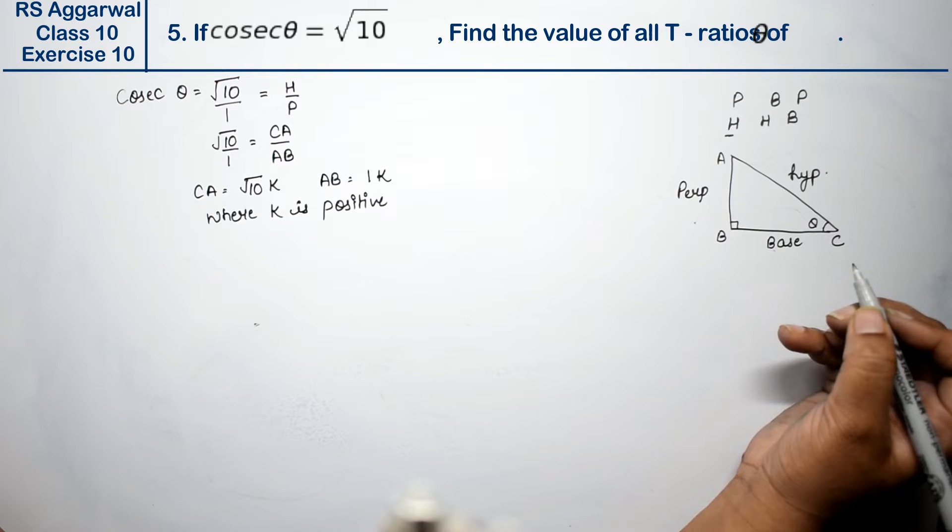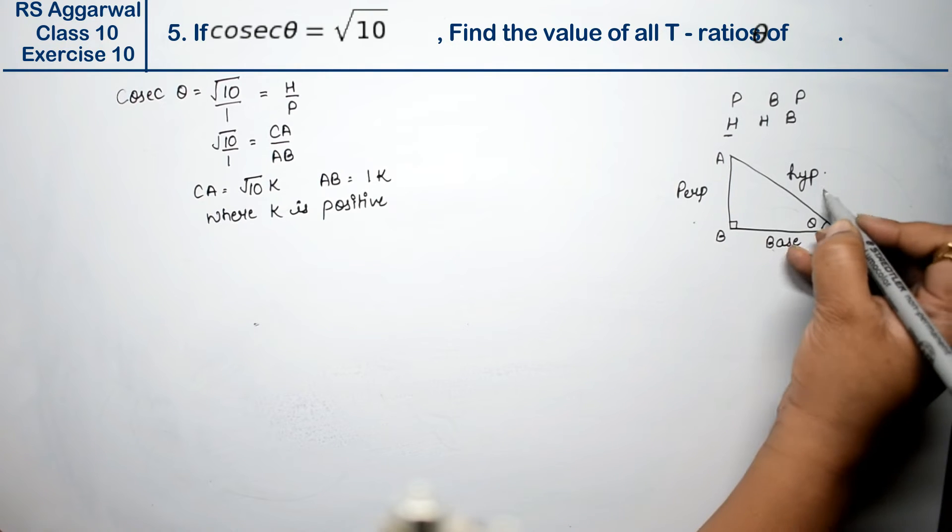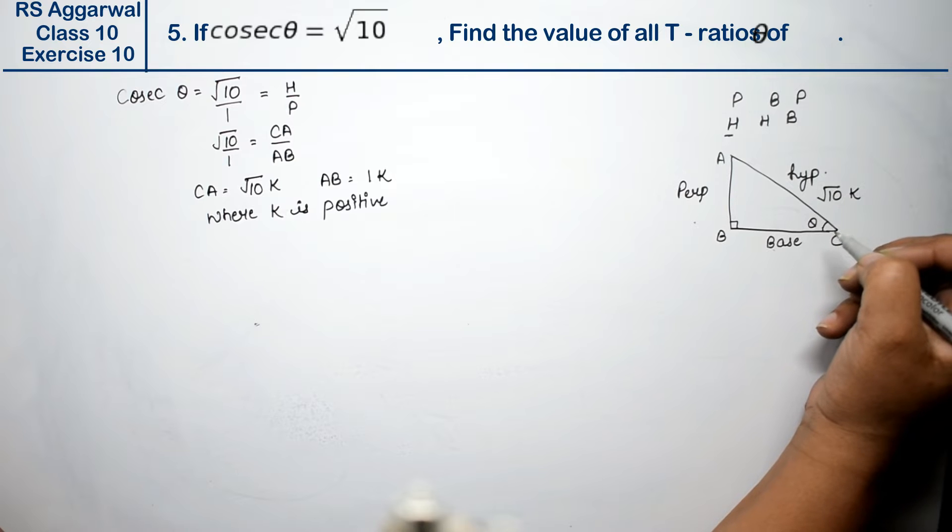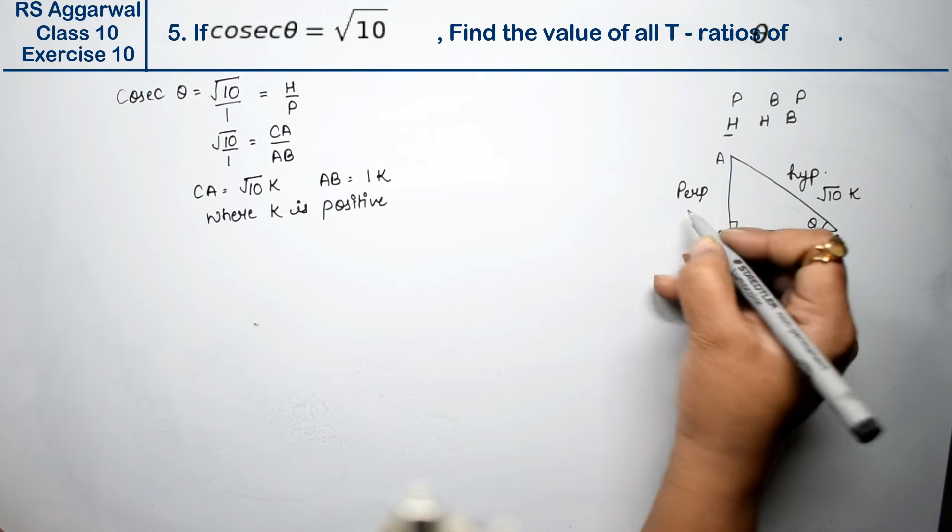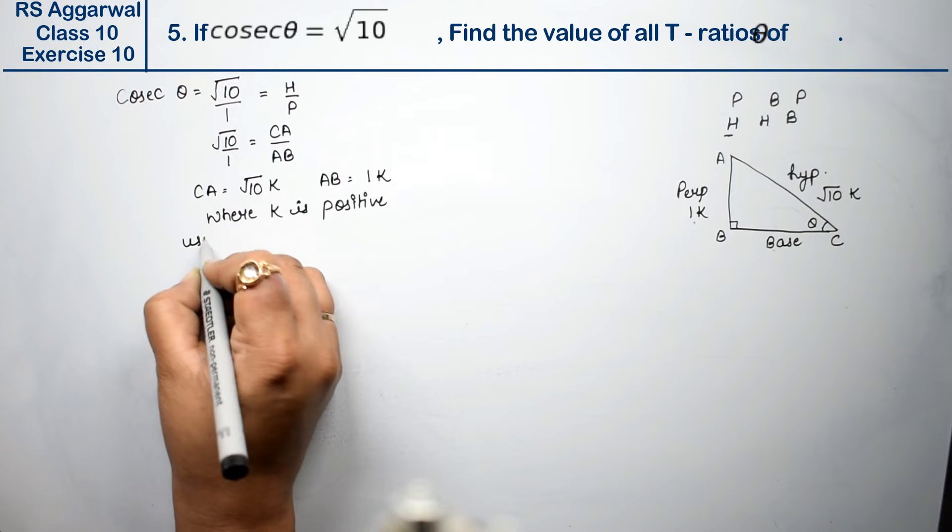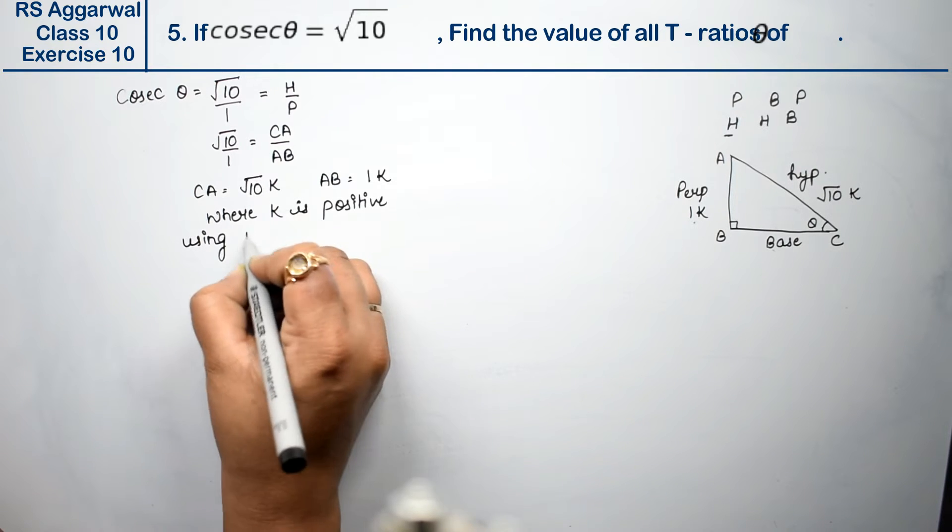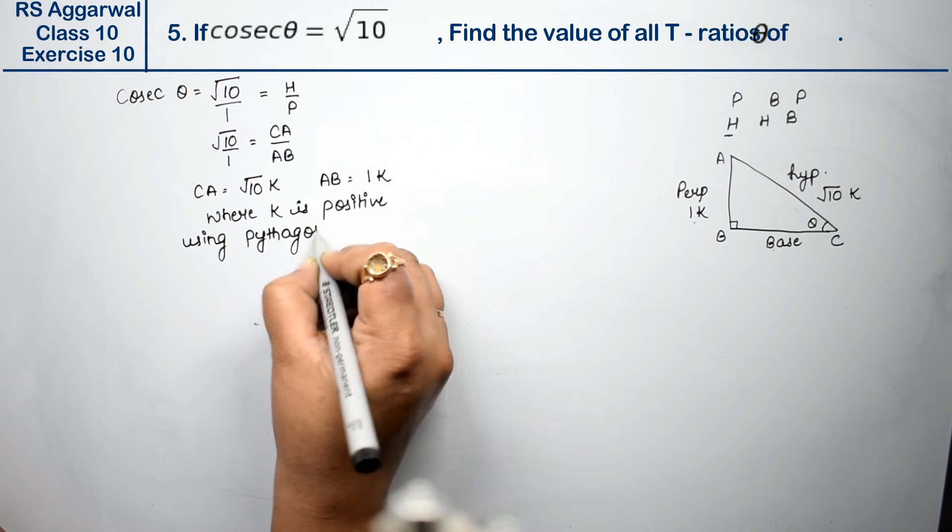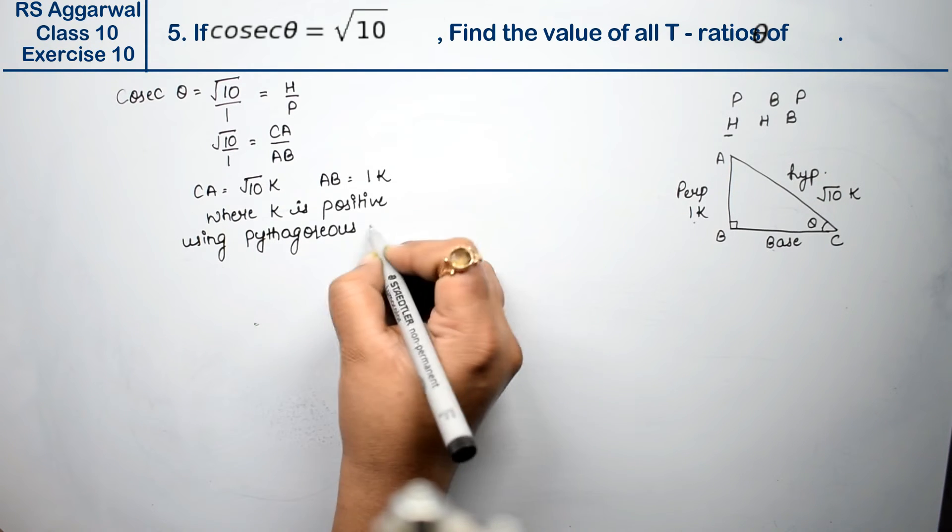Now our root 10k is our hypotenuse and perpendicular is our 1k. Now let's find the base. How do we find using Pythagoras theorem?